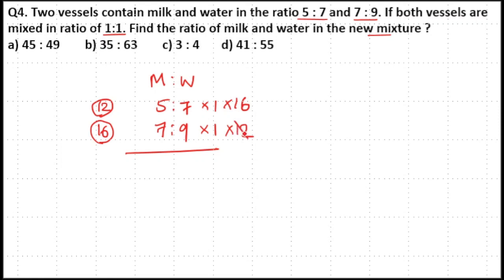When you cancel it with 4, 4 into 3 is 12, 4 into 4 is 16. If you directly write the 4 and 3 numbers, you can take the LCM of 12 and 16. LCM of 12 and 16 is equal to 48. So 12 into 4 equals 48, multiply with 4. 16 into 3 equals 48, so multiply with 3.